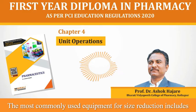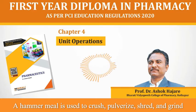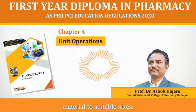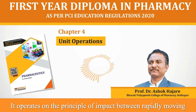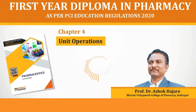The most commonly used equipment for size reduction includes hammer mill and ball mill. A hammer mill is used to crush, pulverize, shred and grind material to suitable sizes. It operates on the principle of impact between rapidly moving hammers mounted on a rotor and the stationary powder bed.